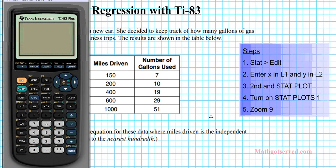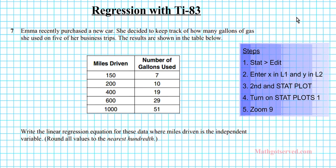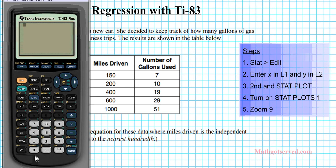All right, so let's go ahead and generate the data for this set right here. So what we're going to do is follow the instructions. First of all, we're going to go to stat, the stats button, and then edit, option one. And then at list one, we're going to enter all these numbers. So 150, enter, 200, 400, 600, and then lastly, 1000.